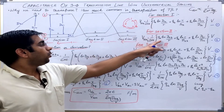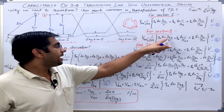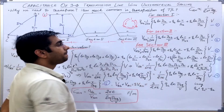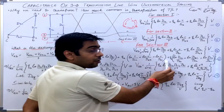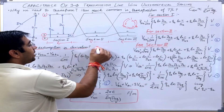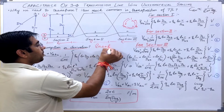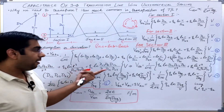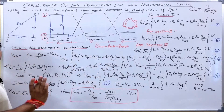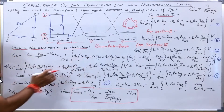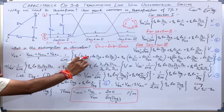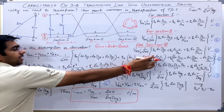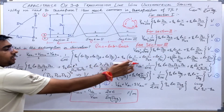Taking Q_A common, the log terms from the three sections combine. Similarly, taking Q_B common, and Q_C common gives their respective results. Using the property that ln(A) + ln(B) = ln(A·B), the plus signs become multiplication signs. So the Q_A term becomes ln(D12·D23·D31 / R³), the Q_B term becomes ln(R³ / D12·D23·D31), and for Q_C the numerator and denominator are the same giving ln(1) = 0.